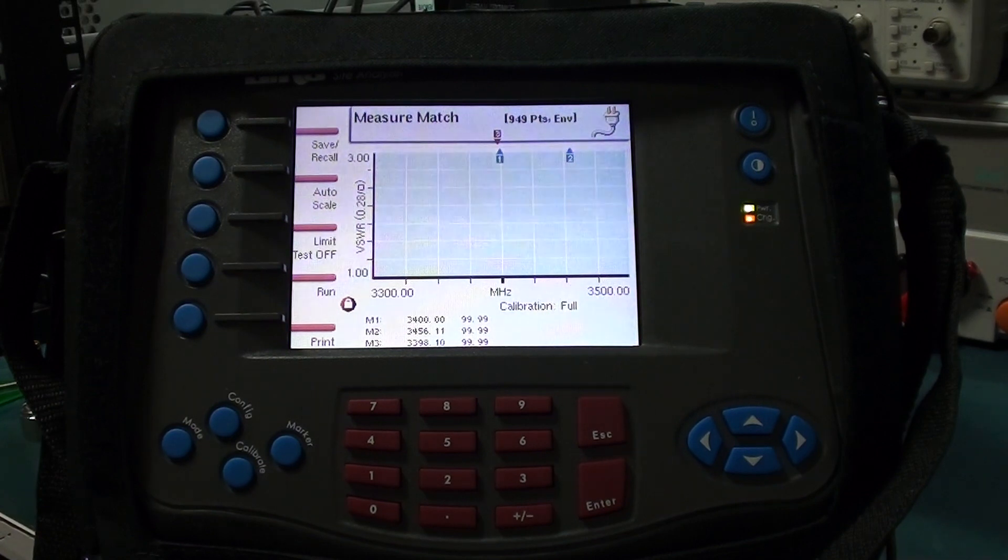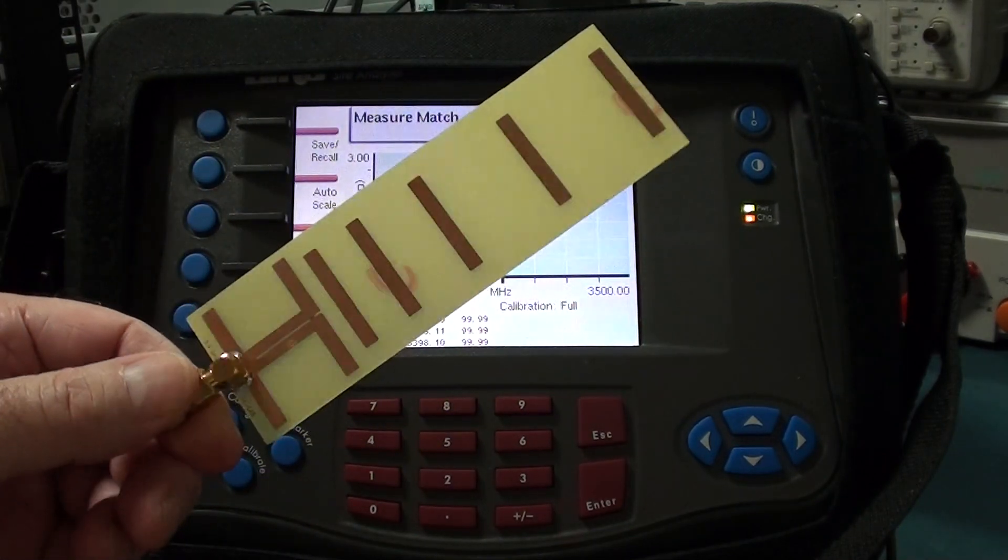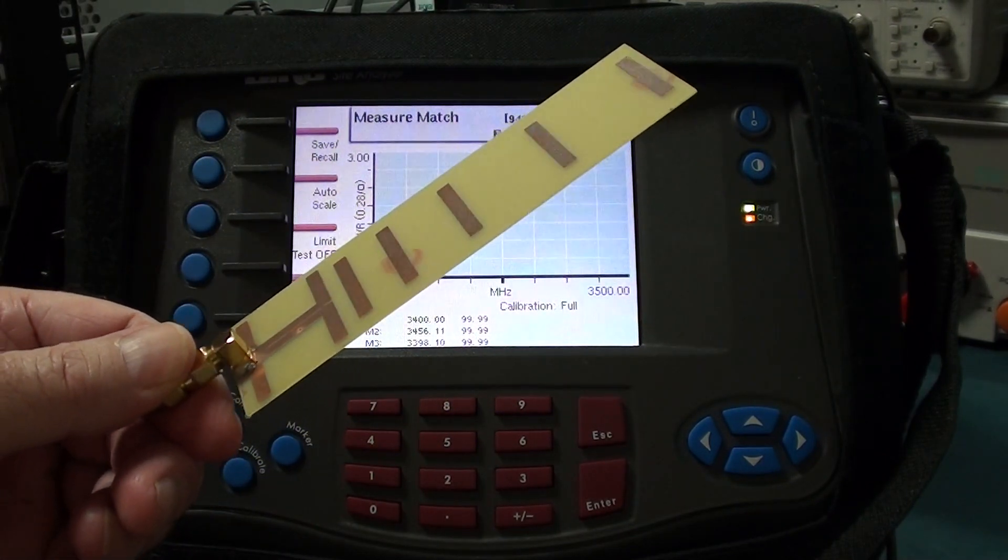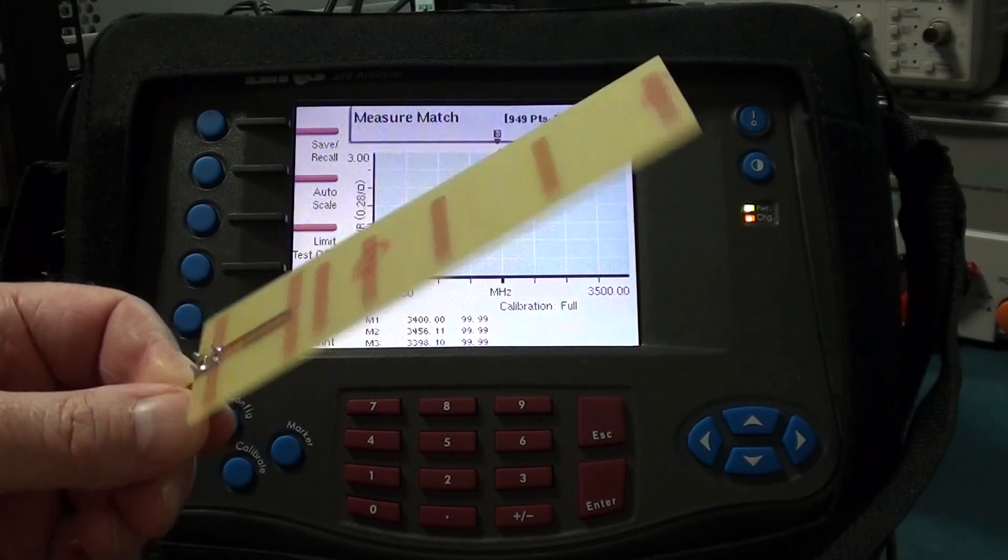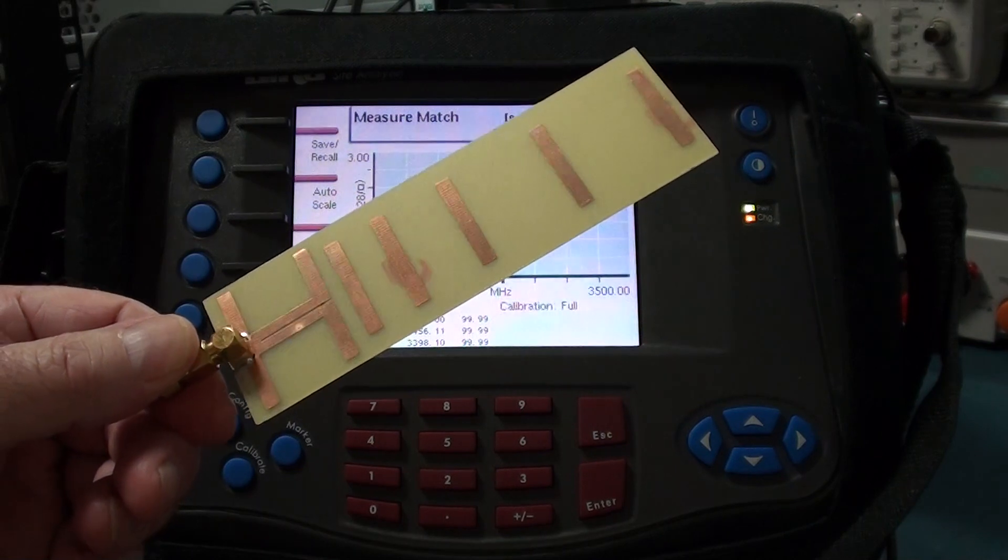Hello everyone, today we're going to test a couple of printed circuit board antennas on a Bird 6000 EX. The first antenna we're going to test is this 3.4 gigahertz SG Lab Yagi that comes with the 3.4 gigahertz transverter.